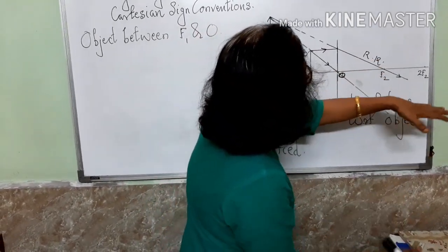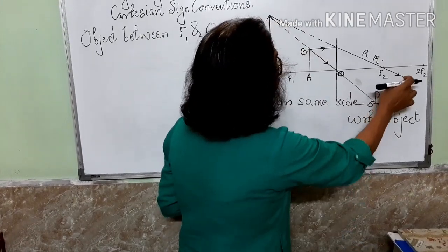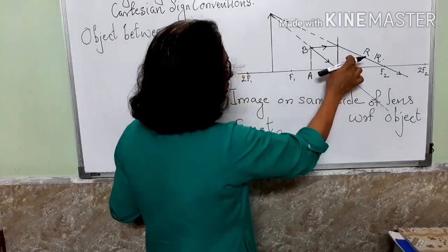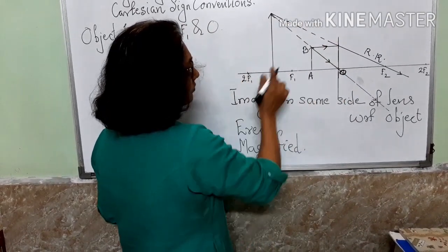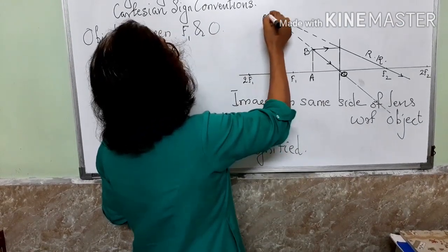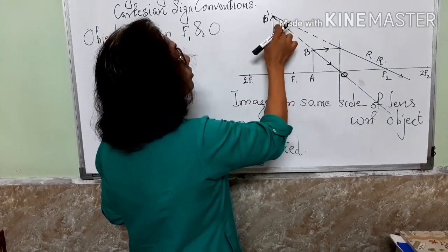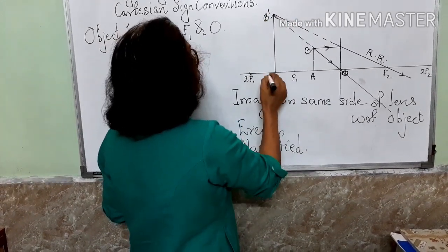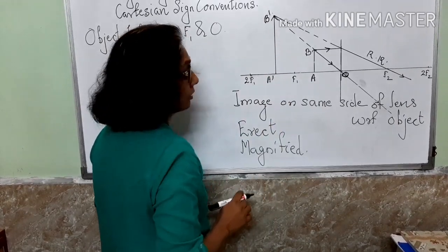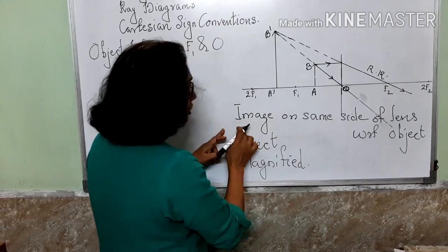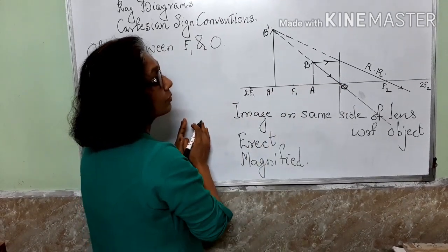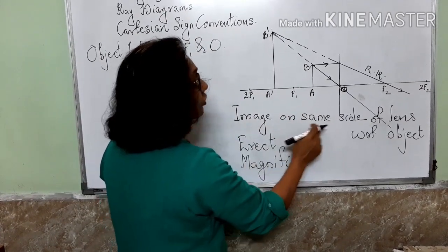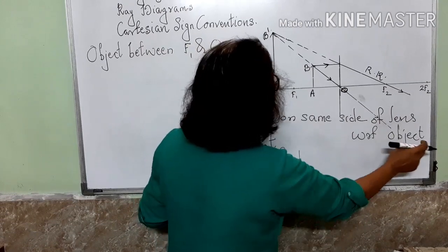These two rays are widening apart — they do not meet, no chance of them meeting. So what we do is we produce them backward and see the image formed. The two rays produced backward will meet at a point. We consider that point as V1 and this point as A1. So we get the image on the same side of the lens with respect to the object.